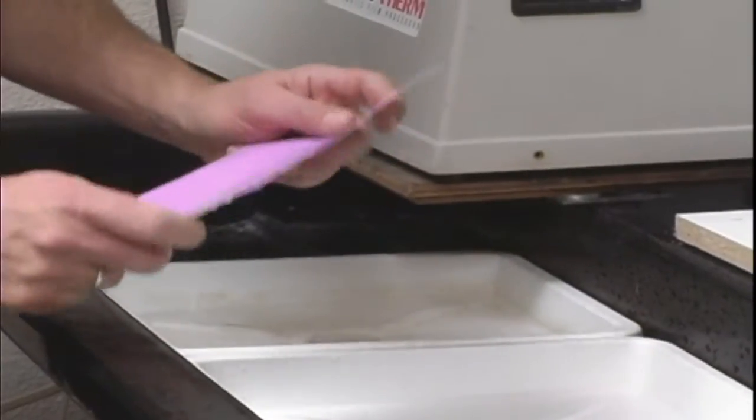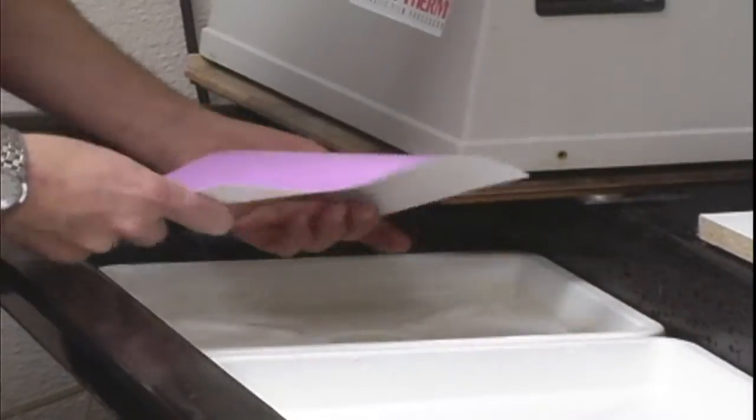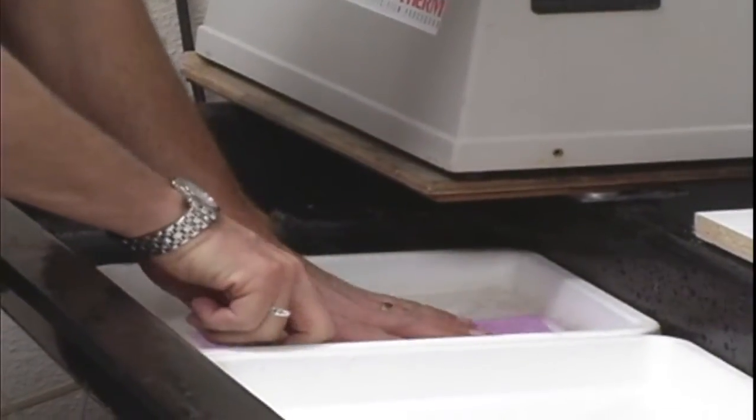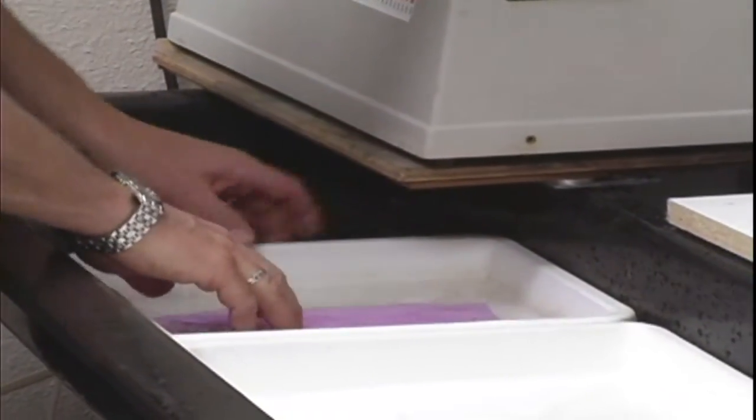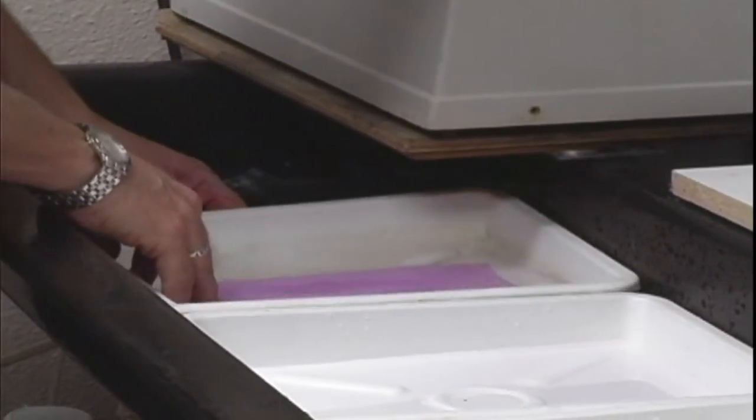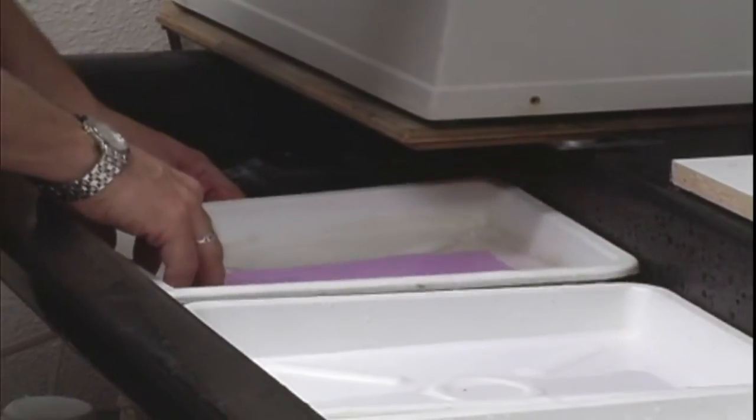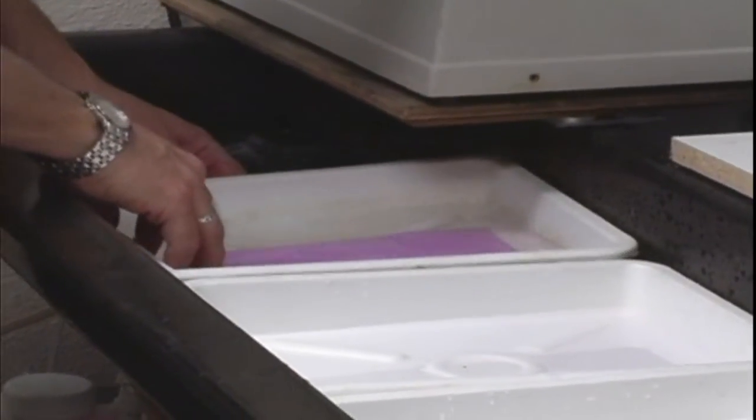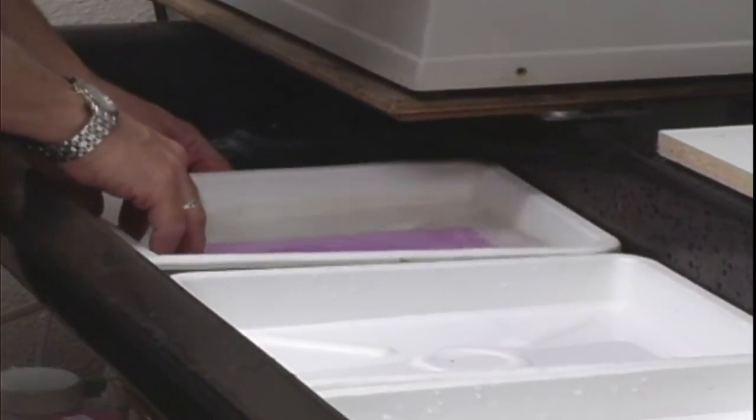After your paper has been exposed to light, we're going to put it in our developer step first. You're going to want to agitate the tray so you get a good developing process going. The time is very critical on this, and you'll find this in the instructions of your developer.